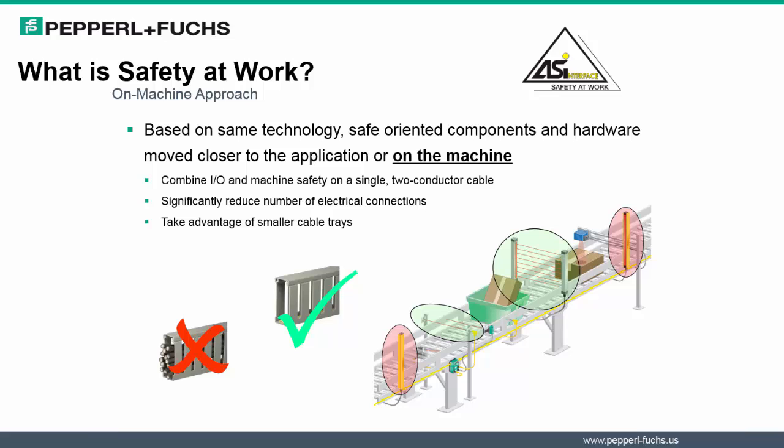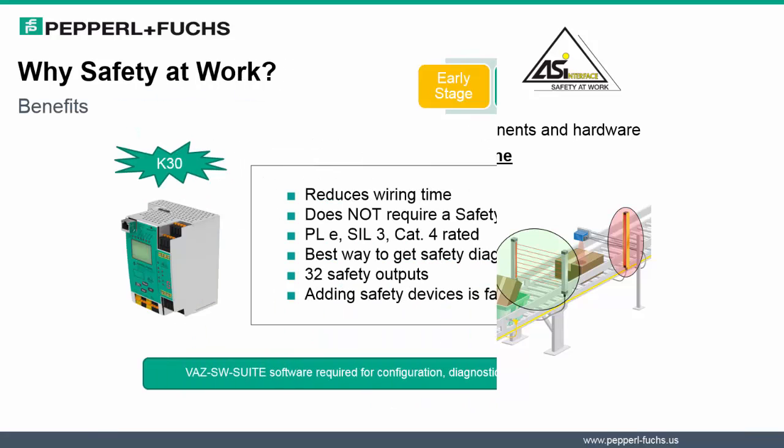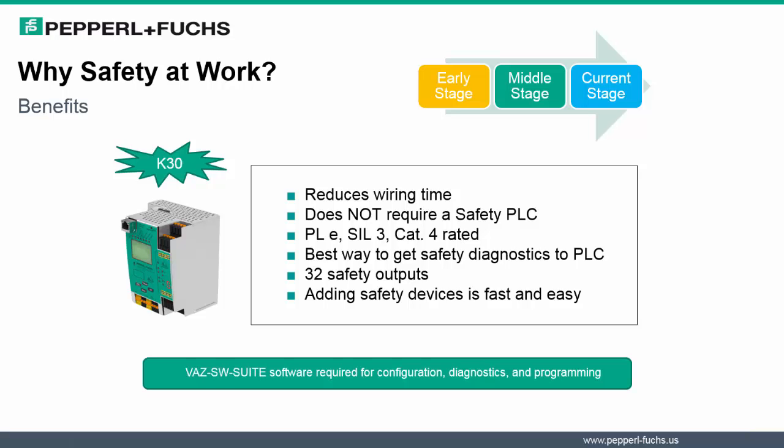Simpler systems result in increased uptime at a lower cost. So, why consider safety at work? There are a number of benefits to highlight. One important one is that safety at work can be added to an existing AS Interface system, as long as the basic AS Interface network rules are satisfied. The evolution did not take place all at one time; I will review the early stage, the middle stage, and the current stage to see how this growth occurred. With safety at work, a safety PLC is not needed, and therefore some costs could be reduced. The highest level of safety is still achievable with SIL 3 and Category 4 with safety at work.